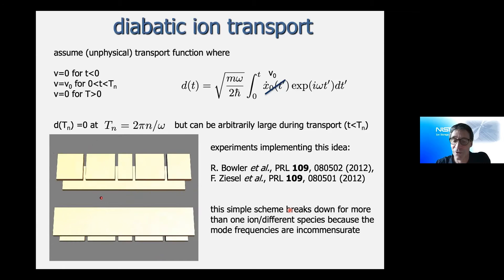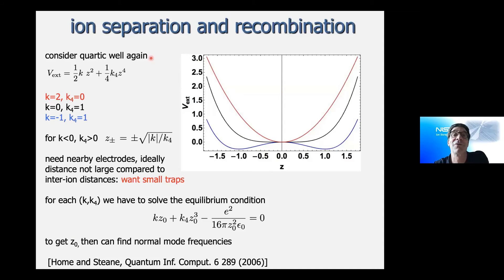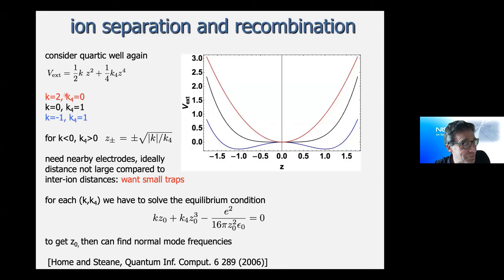Ion separation and recombination is the next topic. As transport primitives go, separation is harder than simple transport. The reason is that during separation the trap frequency must change, which can squeeze the motional state, and for different masses the different inertia makes the ions react differently.